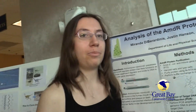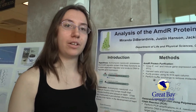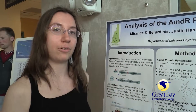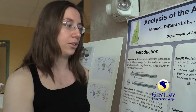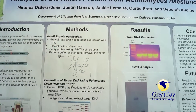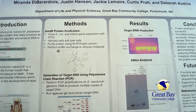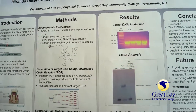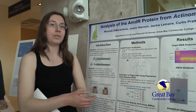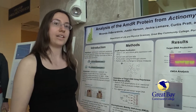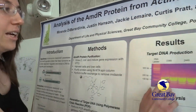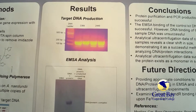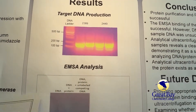In addition to purifying the AMDR protein, we also want to generate our target DNA to which the AMDR protein would theoretically bind. We did that using a method called polymerase chain reaction, or PCR. PCR is basically a technique to generate multiple copies of DNA from just a single strand of DNA. Following PCR, we ran an agarose gel to verify that our PCR method worked. As you can see here, there are four bright bands in four different lanes, and that shows that our PCR did actually work successfully.